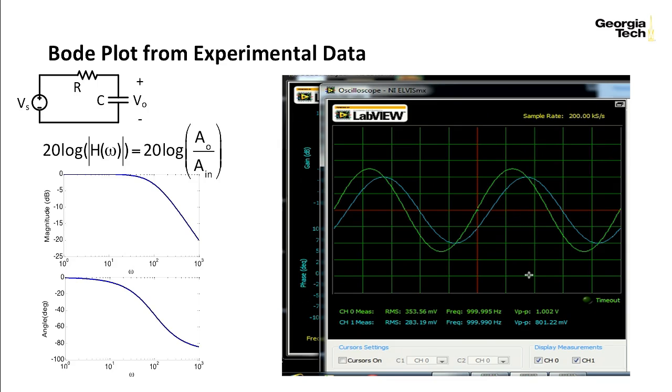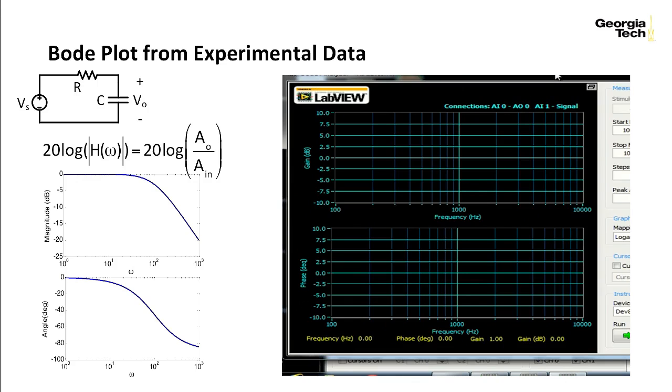If an instrument, like a Bode plot instrument, electronic instrument, wants to find a Bode plot automatically, what it does is inputs a frequency like this, finds this ratio of amplitudes, finds the phase angle between them at that frequency, and then records it. And then it changes the frequency and does those recording again, the amplitude ratio and the phase lag.